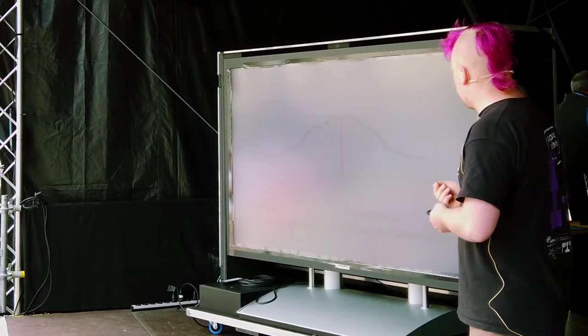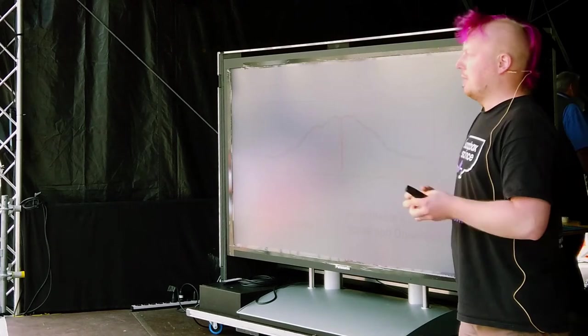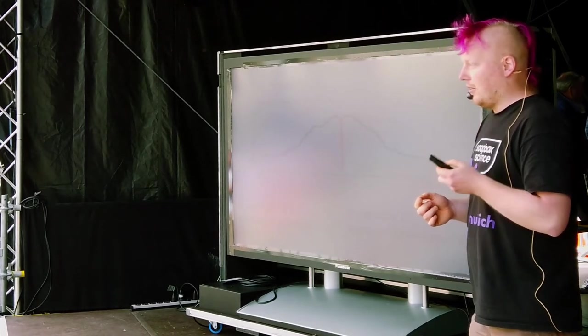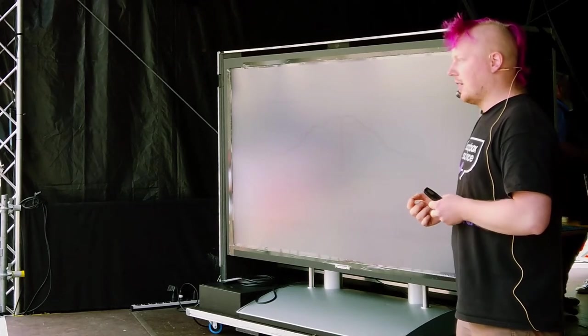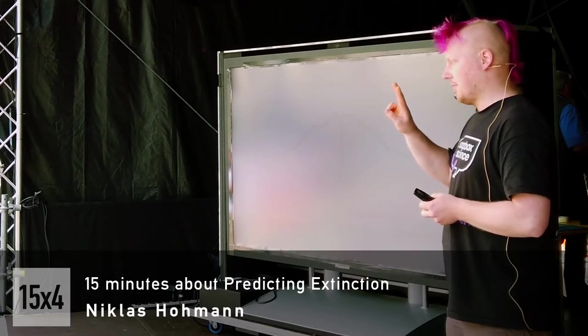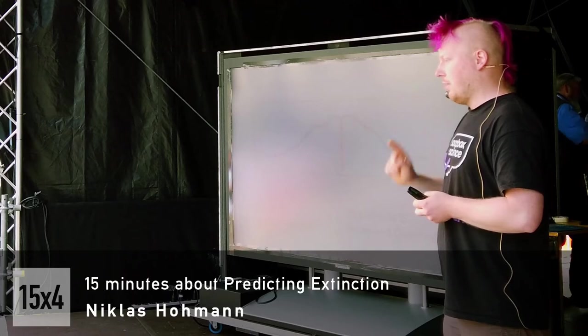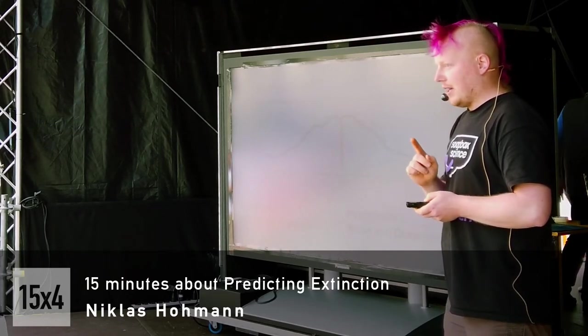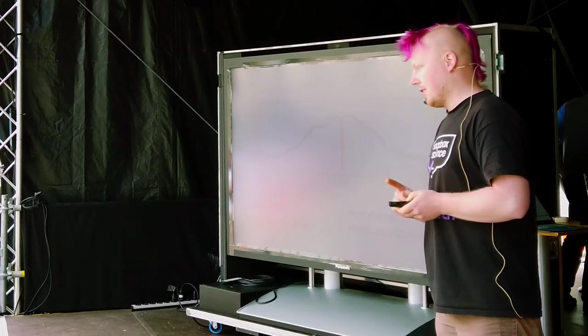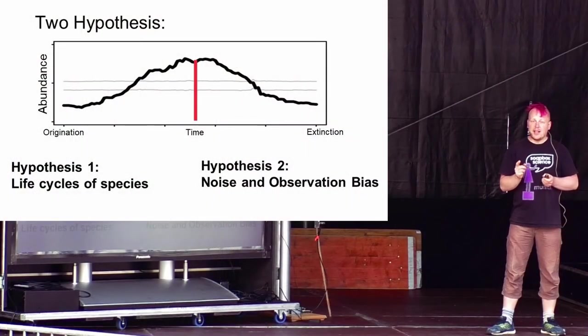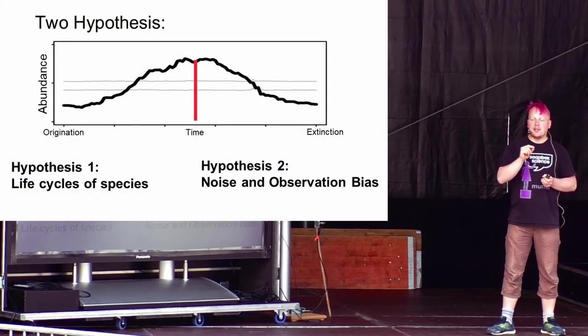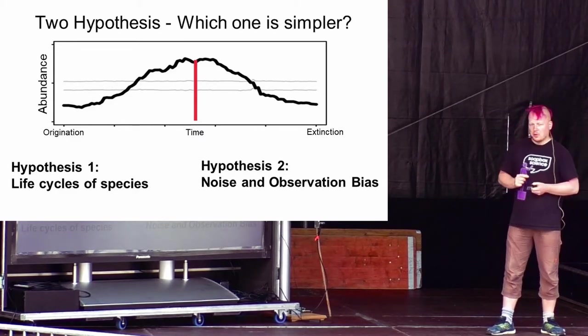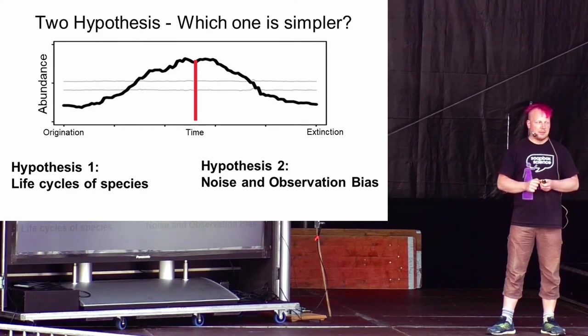So what do we do in science? There's a very fundamental principle in science that's called Occam's razor. Occam's razor pretty much says, if you have two hypotheses, then the simpler one is most likely the better one. And here, simple explicitly means not easier to understand, but that it requires less assumptions. So now the question is, which one of those hypotheses is simpler?